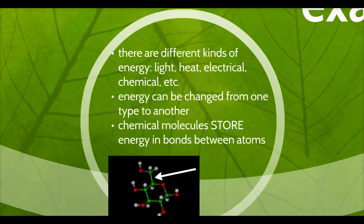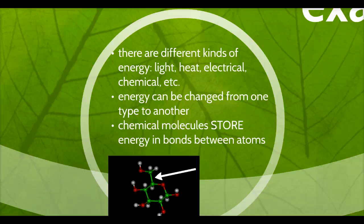There are different kinds of energy. When we talk about energy, it could include light energy, heat energy, electrical energy, chemical energy — those are just some examples. Energy can easily be changed from one type into another. When we talk about photosynthesis, that's actually what's happening: the plant is converting light energy into a form of chemical energy.